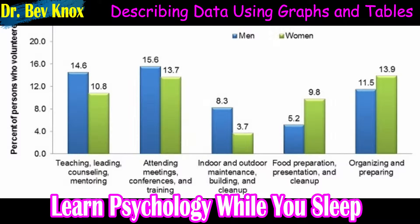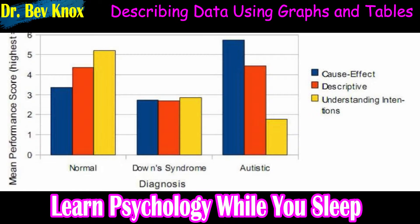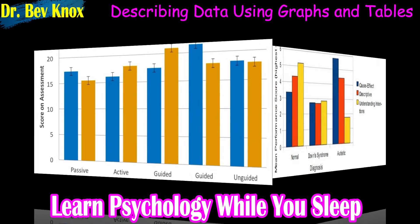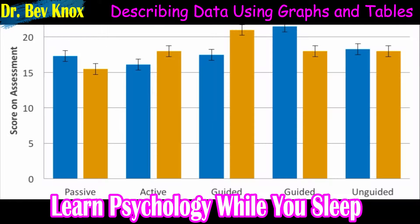If a graph presents information more clearly or efficiently, you should keep the graph and eliminate the text or table. Second, graphs should be as simple as possible. For example, the publication manual discourages the use of color unless it is absolutely necessary, although color can still be an effective element in posters, slideshow presentations, or textbooks. Third, graphs should be able to be interpreted on their own — a reader should be able to understand the basic result from the graph and its caption without referring to the text for an explanation.